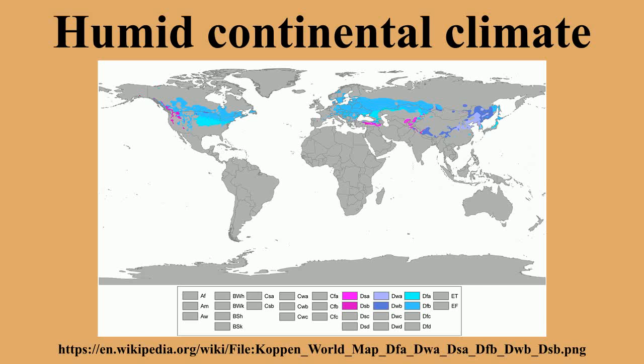Humid continental climates tend to be found between latitudes 37 degrees north and 60 degrees north, within the central and northeastern portions of North America, Europe, and Asia. They are much less commonly found in the Southern Hemisphere due to the larger ocean area at that latitude and the consequent greater maritime moderation.